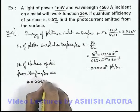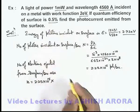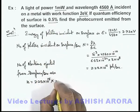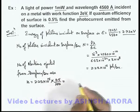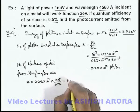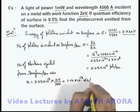So this can be written as 0.5 divided by 100. So on simplifying it gives us 1.14 into 10 to power 13 electrons per second.